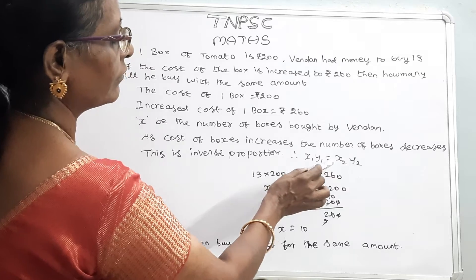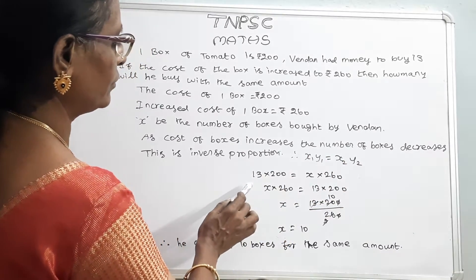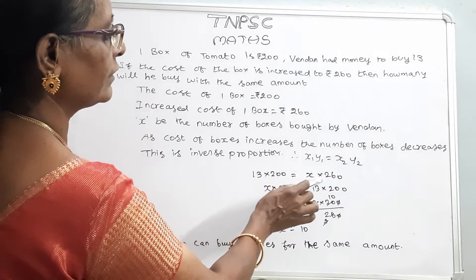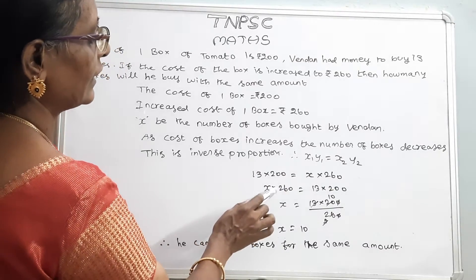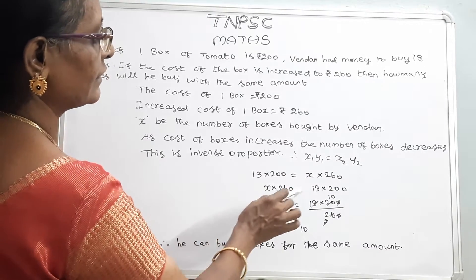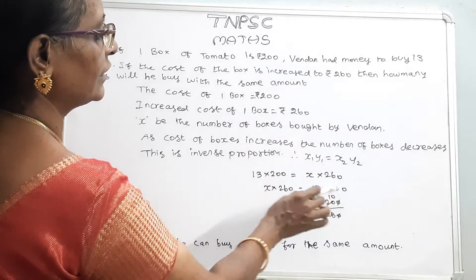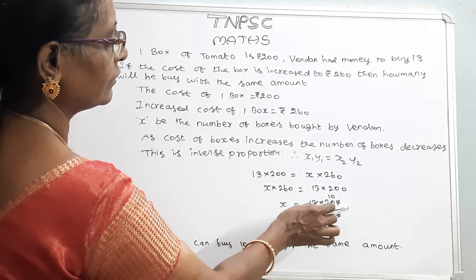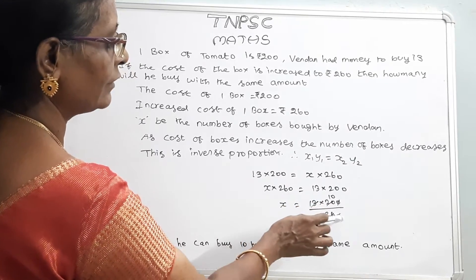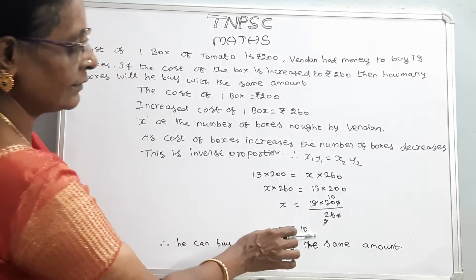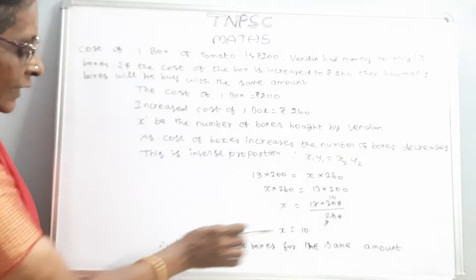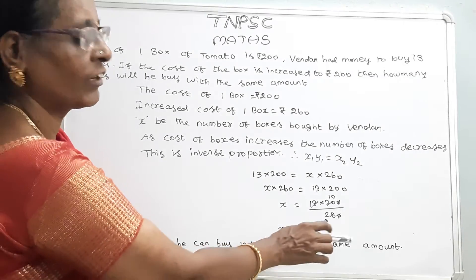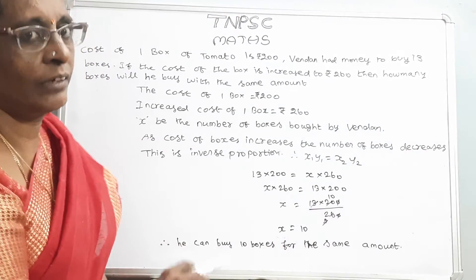Therefore, X1 × Y1 = X2 × Y2. So, 13 × 200 = X × 260. X = (13 × 200) / 260. X is equal to 10. Therefore, he can buy 10 boxes for the same amount.